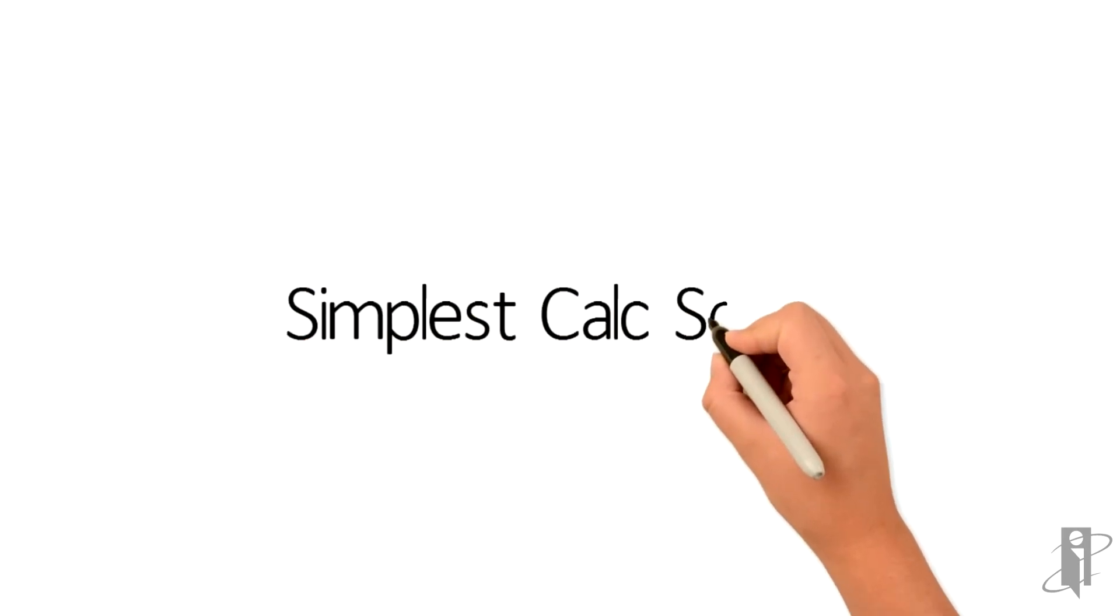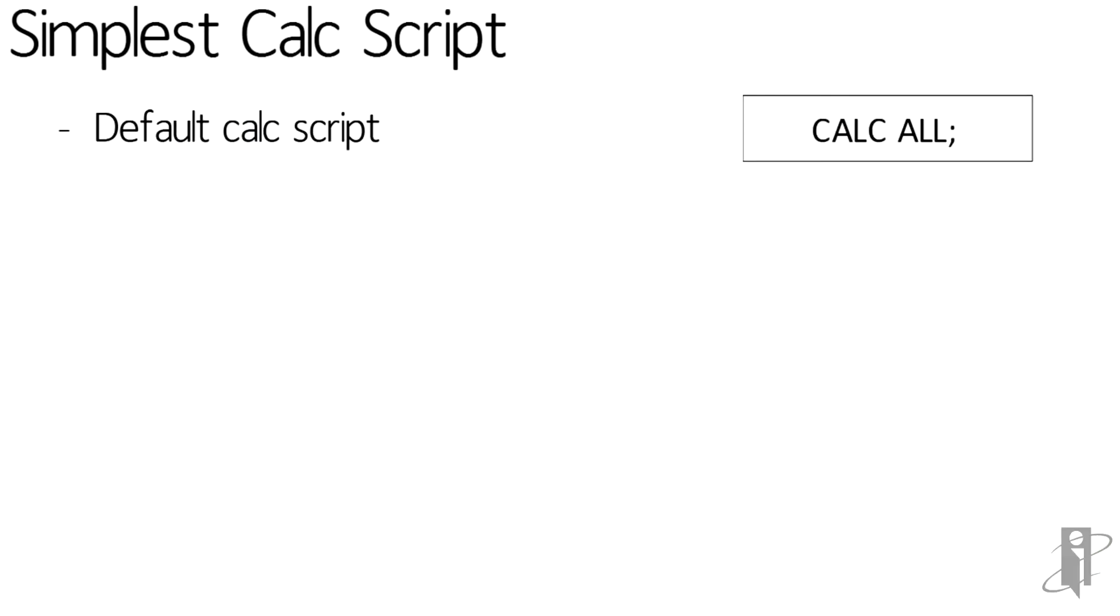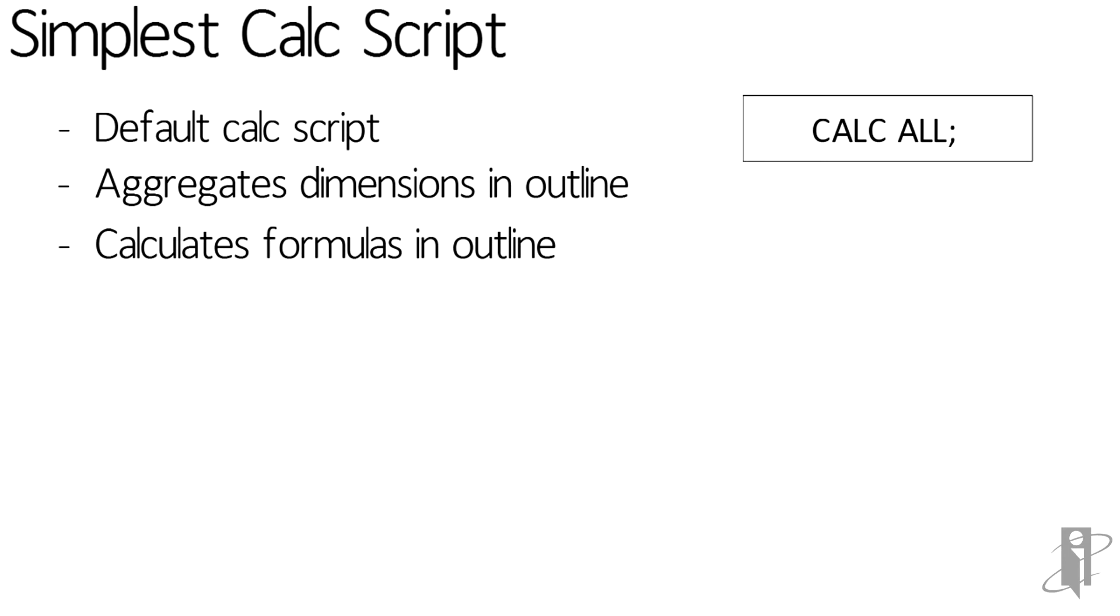Now the simplest Calc Script to create is the default Calc Script. It's quite simply calc space all. Now it's a really powerful command. It actually aggregates all the dense and sparse dimensions in your outline, calculates all the stored members with formulas in your entire outline.